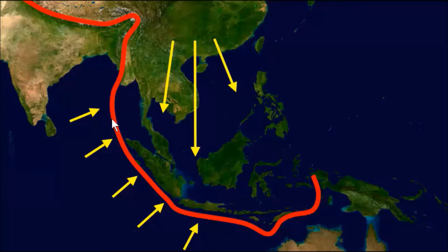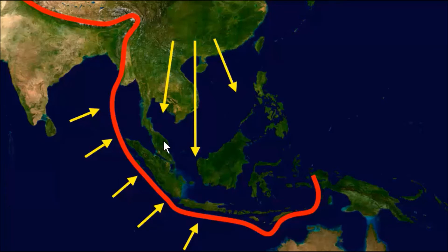I've used a red line to showcase the convergent plate boundary between the Indo-Australian plate — that orange plate — colliding from the south with the Eurasian landmass to the north. This covers mainland Southeast Asia, Borneo, the Malay Peninsula, and Sumatra. You can notice the arrows are going in opposite directions as they collide along that red line.